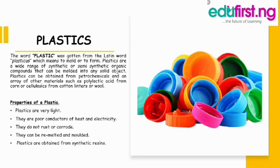What are the properties of plastic? The first one is that plastics are very light — meaning they are not heavy. Plastics are also poor conductors of heat and electricity, which is why they are used for most electrical accessories. Next, plastics do not rust or corrode, obviously because they don't contain iron. And plastics can be remelted and remolded.